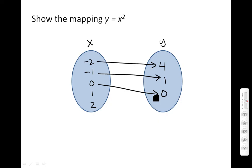Positive 1 squared is positive 1. And I already have that value in my range circle. So I'm going to draw an arrow from positive 1 to positive 1 as well. And then positive 2 is also positive 4. So I'll draw an arrow here.